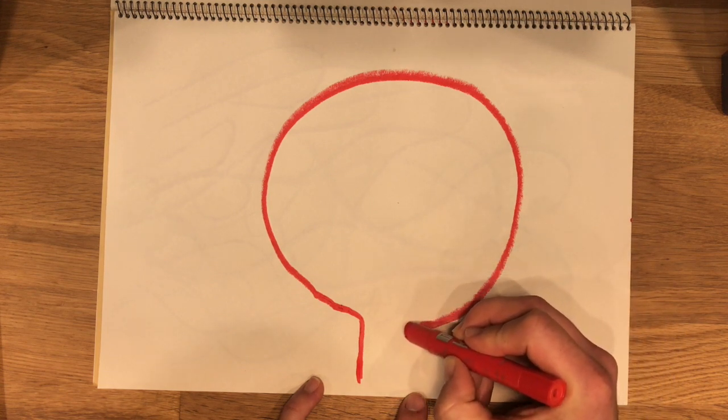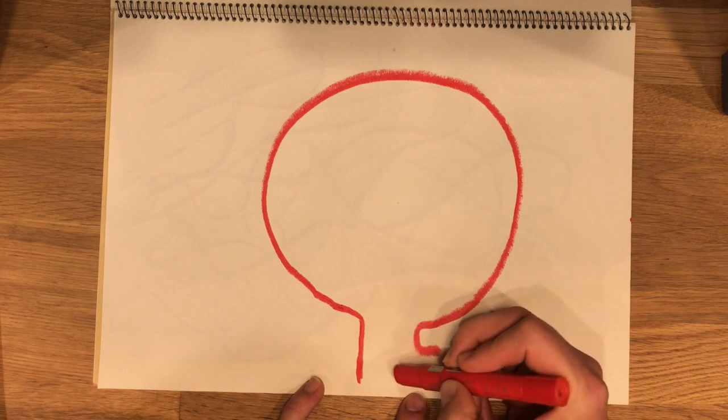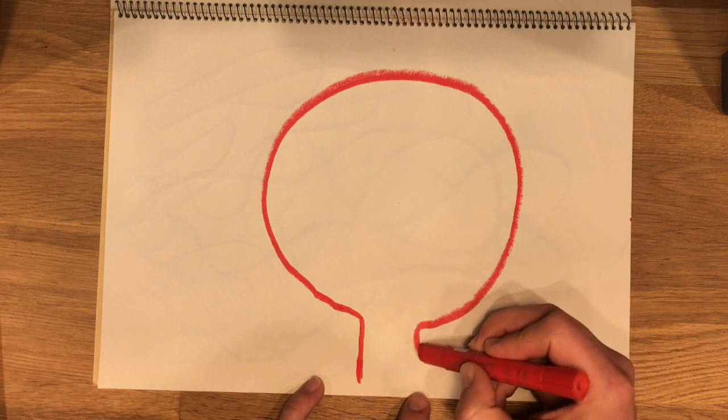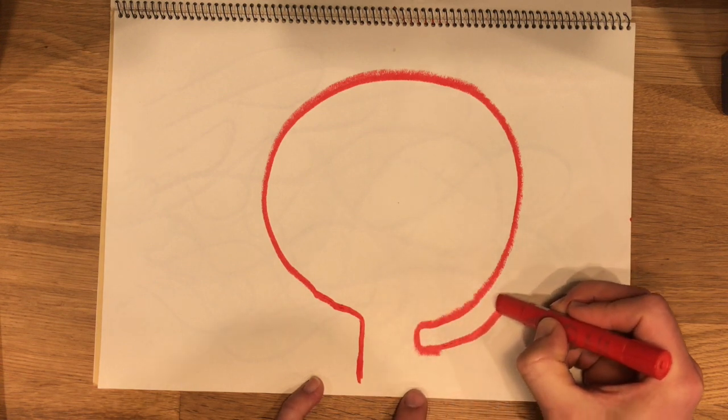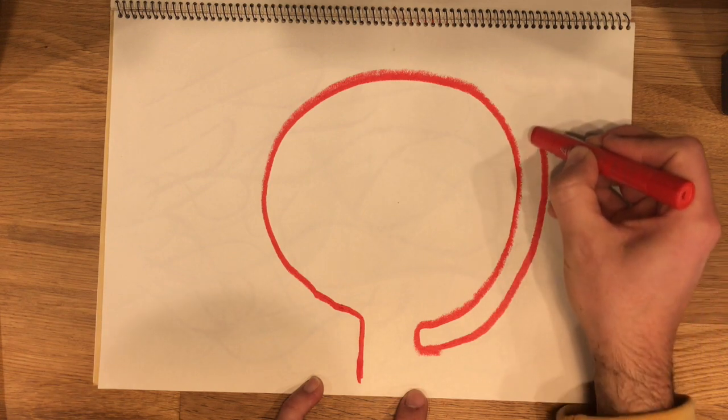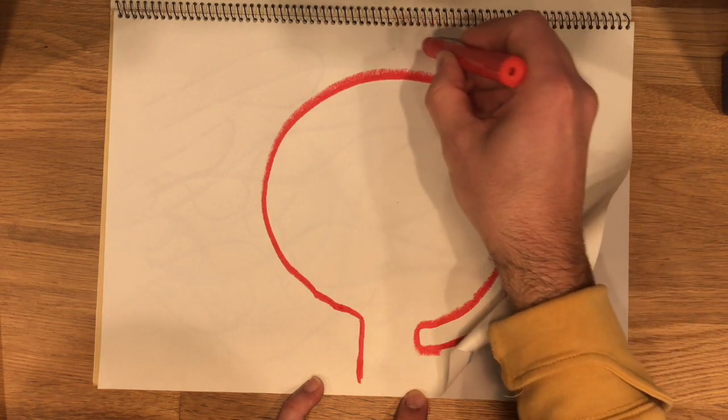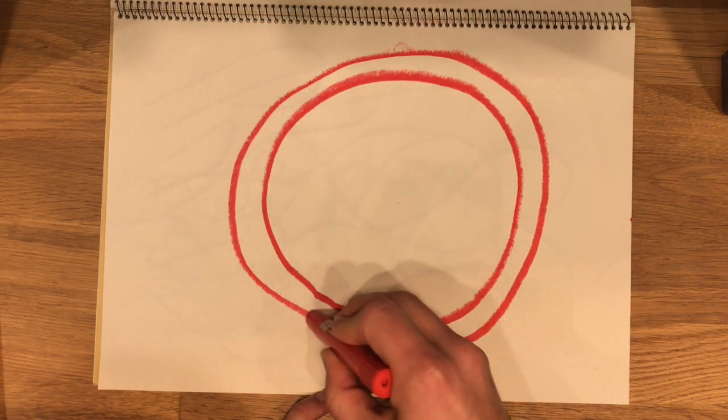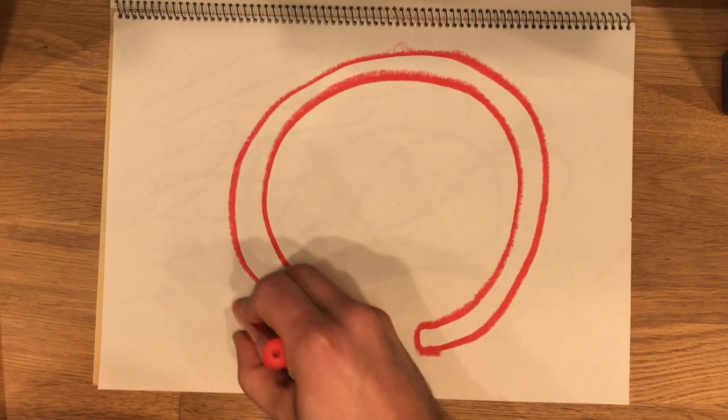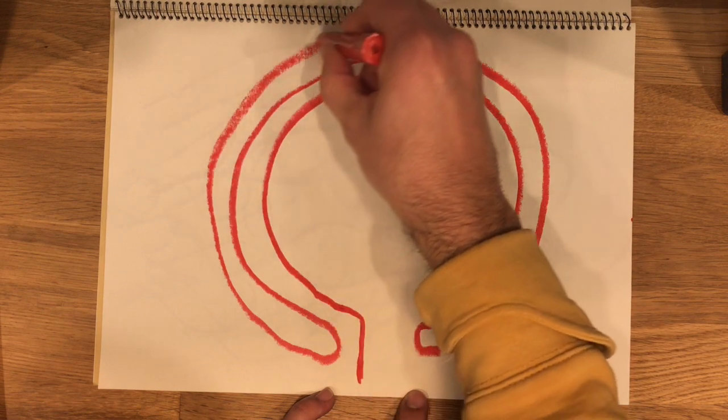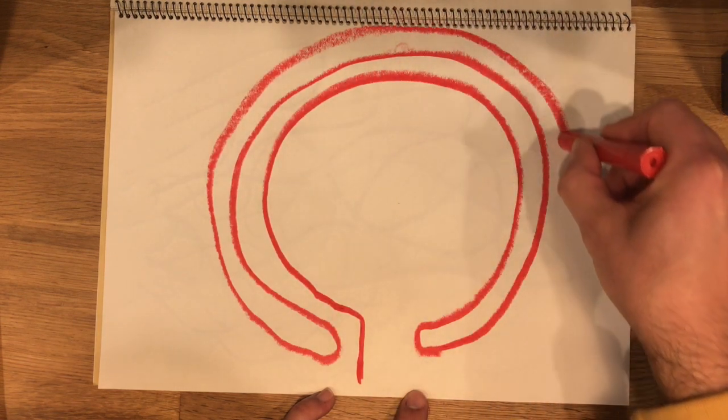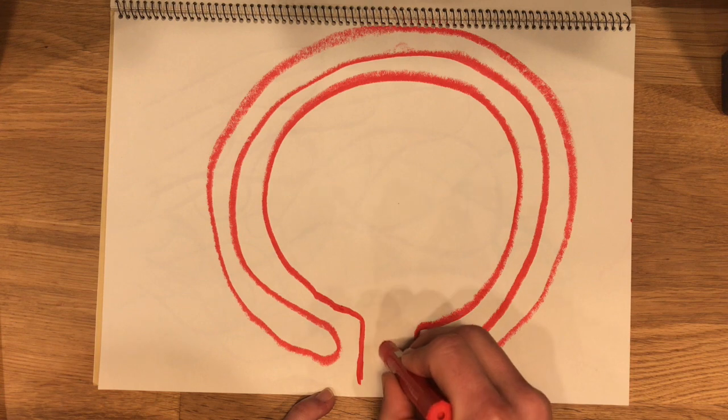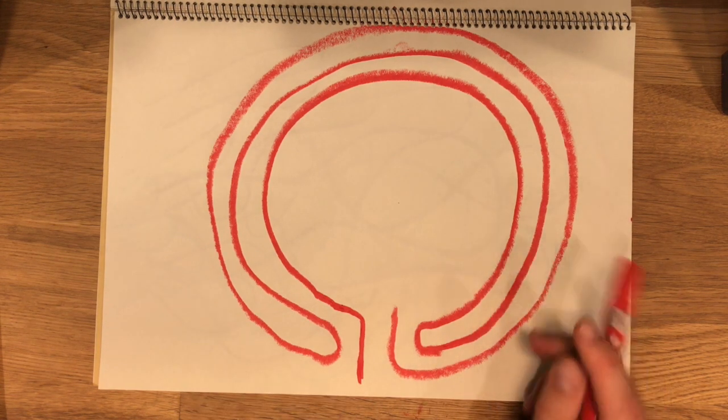Then turn outward and you want to leave space here because you're going to come back around. So you want to turn outward and then follow the circle that you created. Turn outward again and go up and over and then come all the way back around and into the center.